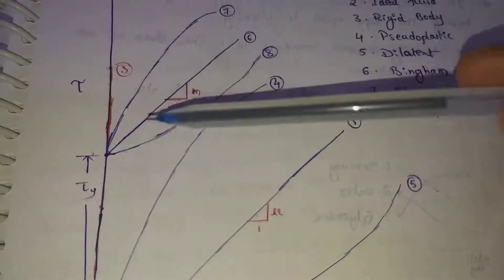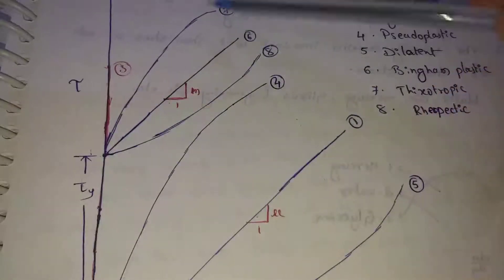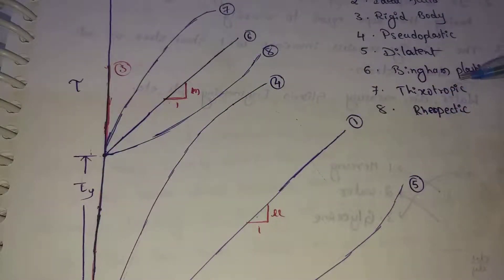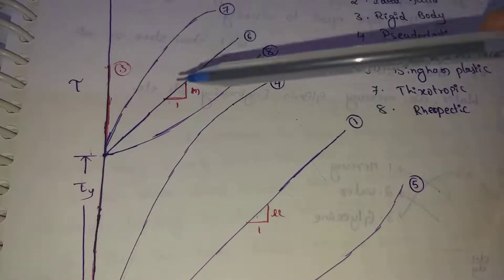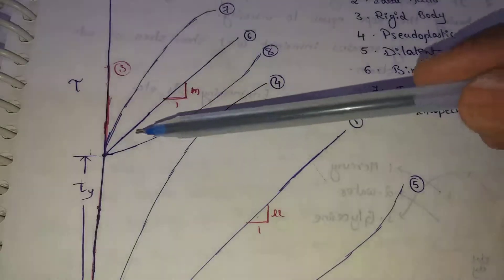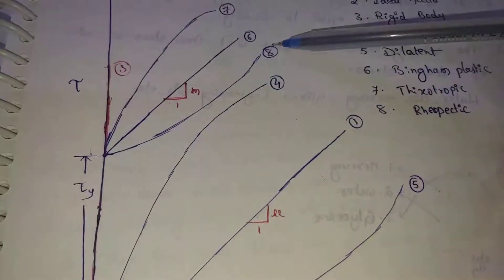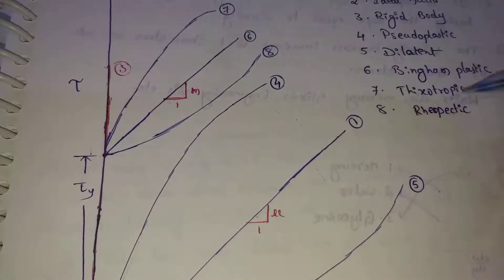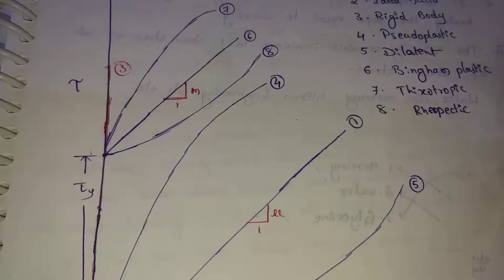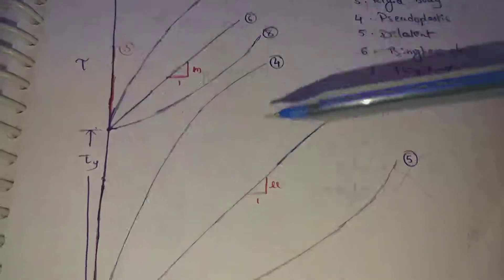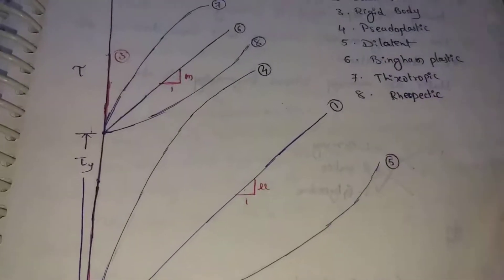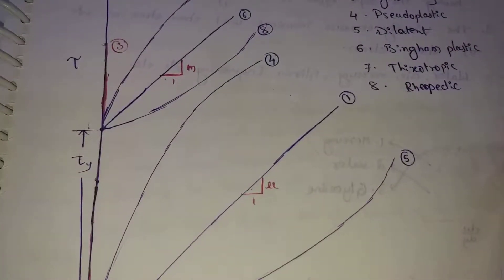The seventh one is thixotropic. The eighth one is real plastic. This classification is very important and frequently appears in exams.